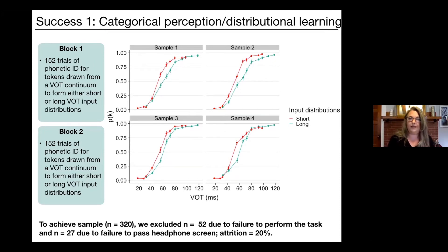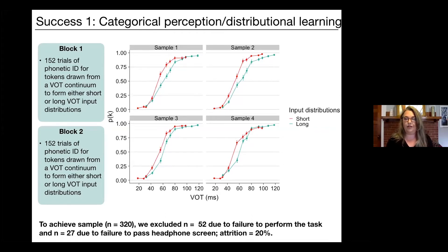I wouldn't be a speech perception scientist if I didn't have participants make phonetic decisions for voice onset time continua. In this study, listeners completed two blocks of 152 trials, and across blocks the VOT continua were shifted to provide either short or long VOT input distributions. We replicate the robust phenomenon of categorical perception as indicated by the logistic response curves, and we also replicate distributional learning, with identification functions for the short VOT input displaced to shorter VOTs than for the long VOT input. We had to exclude 52 people due to failure to perform the task and 27 due to failure to pass the headphone screen.